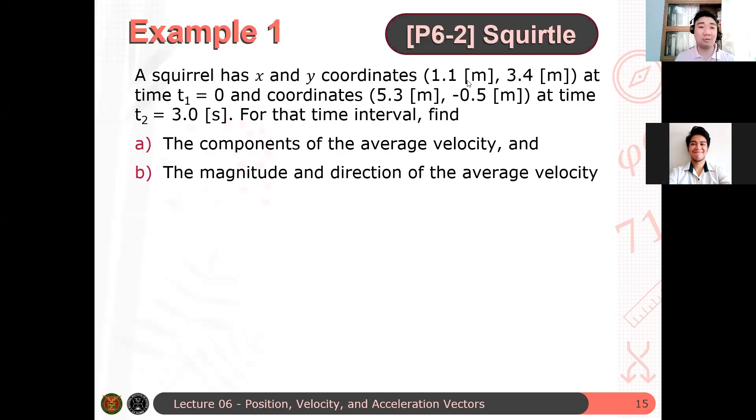So let's have an example. A squirrel has x and y coordinates 1.1 meters, 3.4 meters at time t1 equals 0, and coordinates 5.3 meters minus 0.5 meters at time t2 equals 3.0 seconds. For that time interval, find letter A, the components of the average velocity, and B, the magnitude and direction of the average velocity.